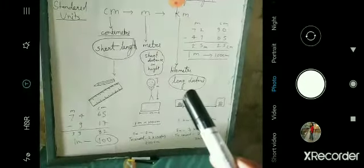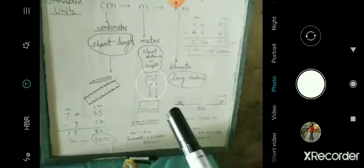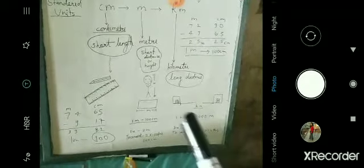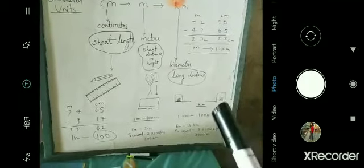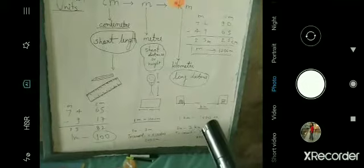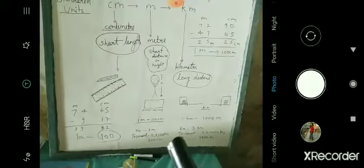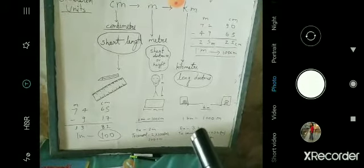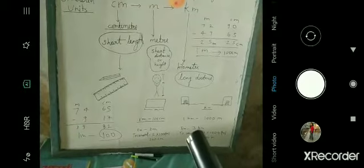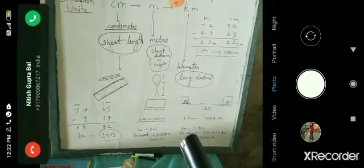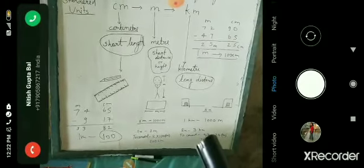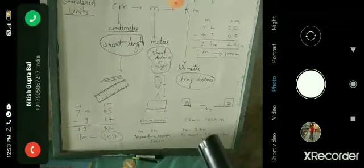Kilometer is used for long distance, like the distance between your home and school. 1 km is equal to 1000 meters. For example, 3 km converts to 3000 meters.